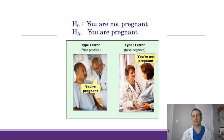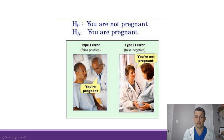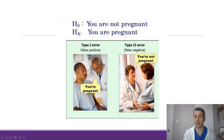To illustrate this further, I have a silly example here. We have the null hypothesis that you are not pregnant, and the alternative hypothesis that you are pregnant. This first figure shows the example of a type 1 error, sometimes called a false positive. Obviously, we have a man here, and the doctor is saying you're pregnant. The null hypothesis is true, but we're rejecting it and accepting the alternative hypothesis. This is an example of a type 1 error.